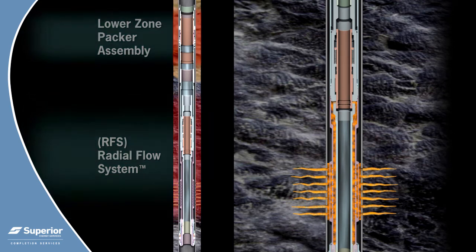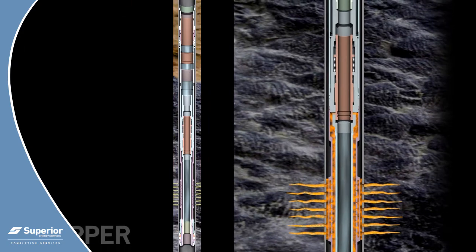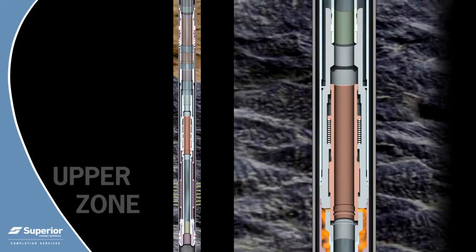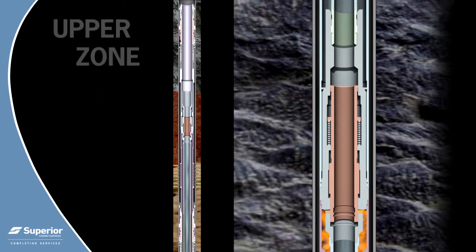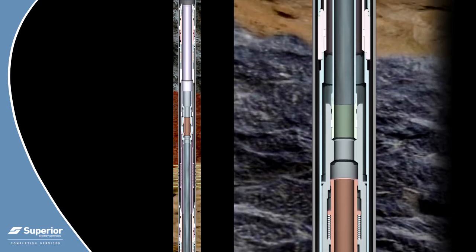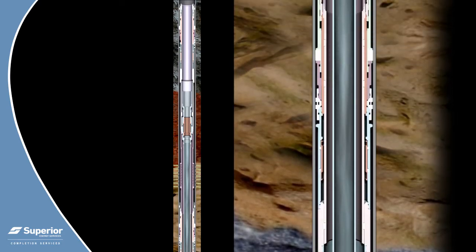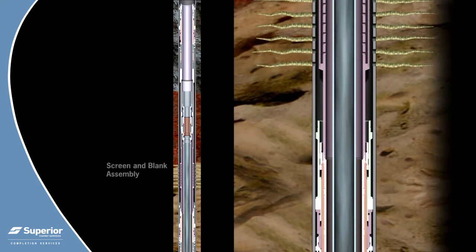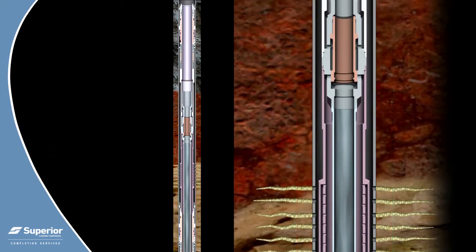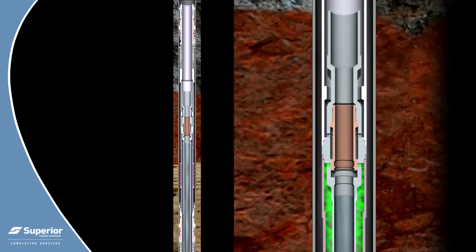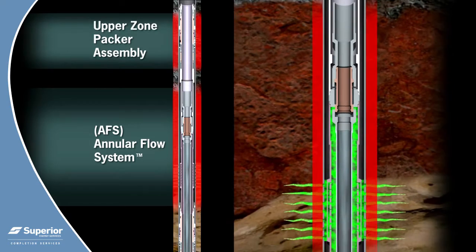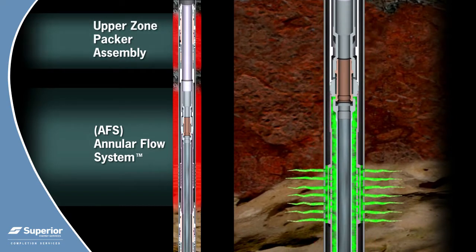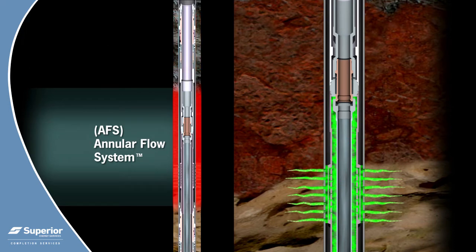A similar system is employed to isolate the upper zone. A concentric production isolation string is run through the upper zone screen. Lower zone flow will pass through the ID of this string. Upper zone flow is directed through the annulus formed between the upper zone screen and the OD of the isolation string. The annular flow valve is installed at the top of the screen and isolates this flow path, providing bi-directional zonal flow control to the upper zone. This valve is also hydraulically balanced during upper zone treatment and is not affected by formation pressures.